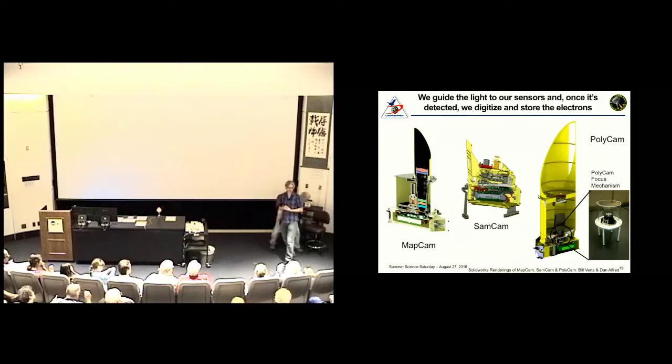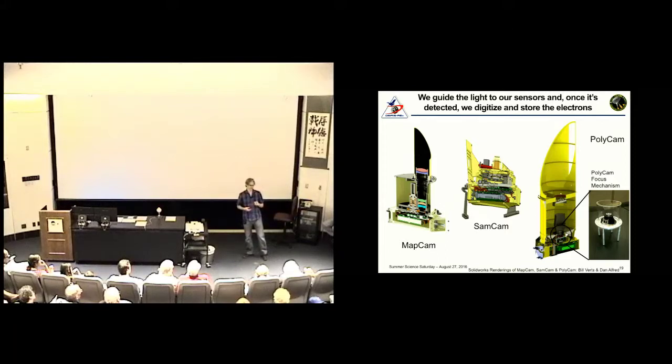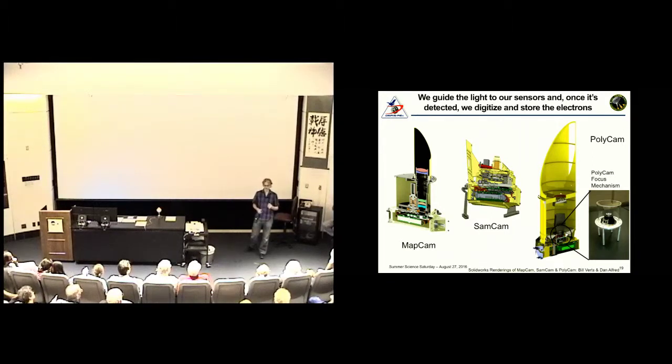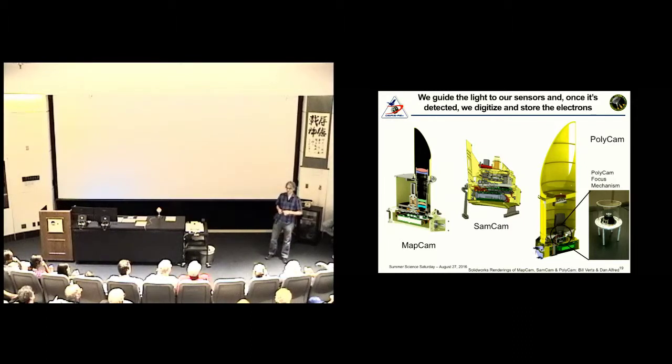Originally, we were going to go to an object that was 2001 AE2. Just to kind of highlight how hard it is to pick a target, we picked this object because it had an easy to get to orbit. And based on a single spectrum that was taken, it looked like it was carbonaceous, one of these carbon-rich objects that probably hasn't changed much over the history of the solar system. Well, we submitted the proposal. We weren't accepted. Fast forward a couple years, the Spitzer Space Telescope observed this target.